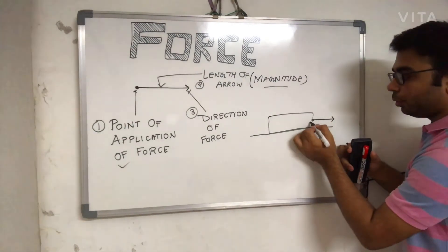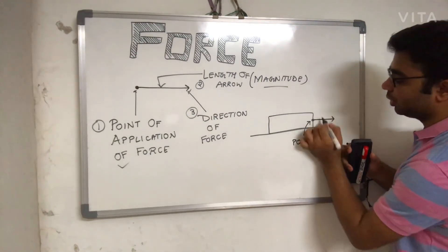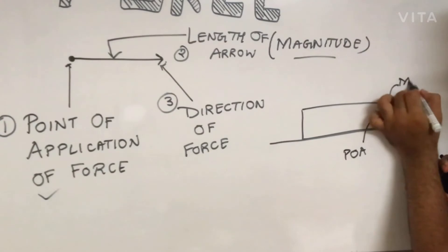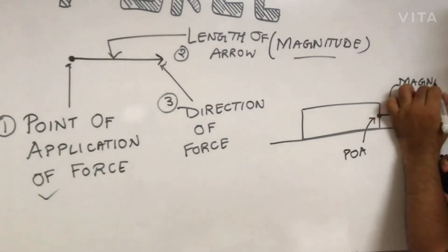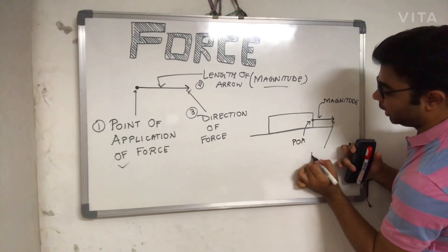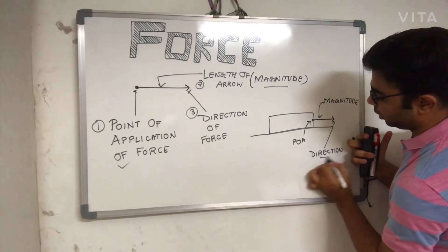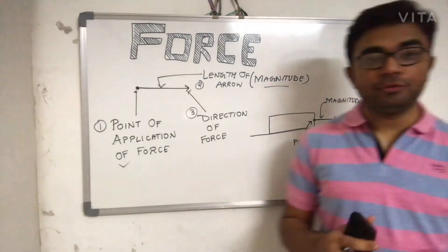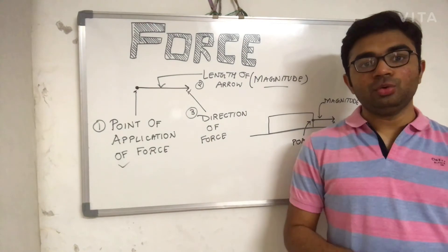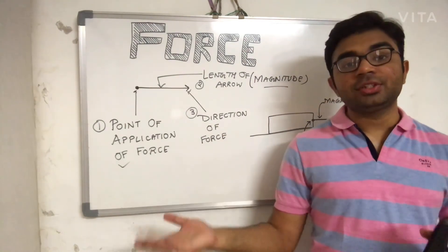So if I draw the diagram — this is the point of application of force, this is the length of the arrow showing the magnitude, and the arrowhead is showing the direction of the force. This is how you can represent examples of external as well as internal forces.